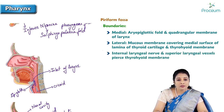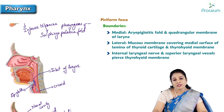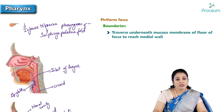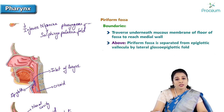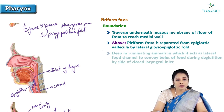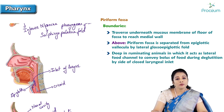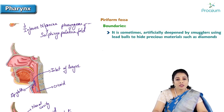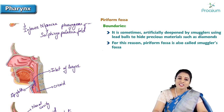The internal laryngeal nerve and superior laryngeal vessels are present in this fossa. They pierce the thyrohyoid membrane and traverse underneath the mucous membrane of the floor of the piriform fossa to reach its medial wall. Above, the piriform fossa is separated from the epiglottic vallecula by the lateral glossoepiglottic fold. The piriform fossa is deep in ruminating animals, acting as a lateral food channel to convey the bolus during deglutition alongside the closed laryngeal inlet. It is sometimes artificially deepened by smugglers using lead balls to hide precious materials such as diamonds — for this reason, the piriform fossa is also called the smuggler's fossa.